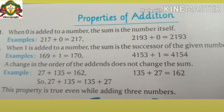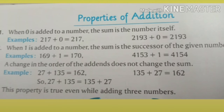And second point — when one is added to a number, the sum is the successor of the given number. Means कि किसी भी number में when we add one, so the number will be the next number — means the successor number. Suppose you have 15 and when we add one, then you have 16. Means जो भी given number होगा, उसका successor number।